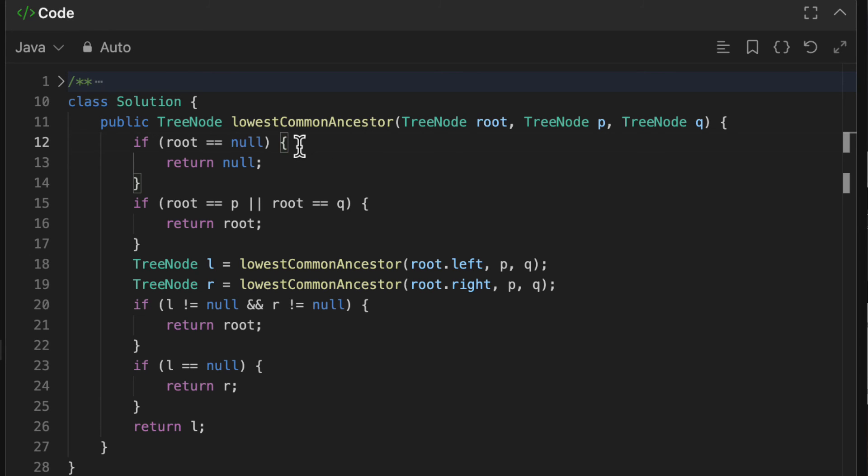This is the solution for this problem. Here first, the first thing we check if the root is null, we just return null. Otherwise, the first check we need to do is if my root equals P, we can just directly check the nodes if the root equals P or Q. We just return the root itself. This is the base case that we spoke about in the beginning.